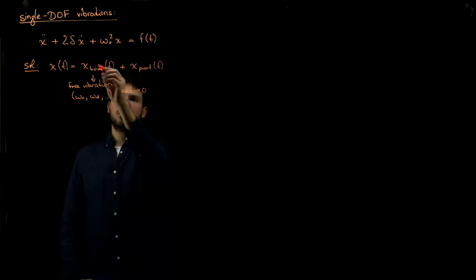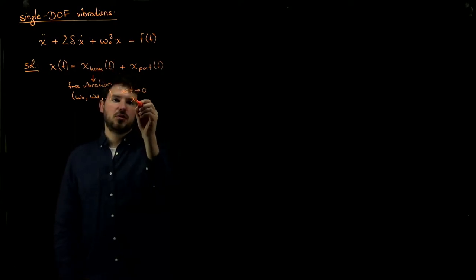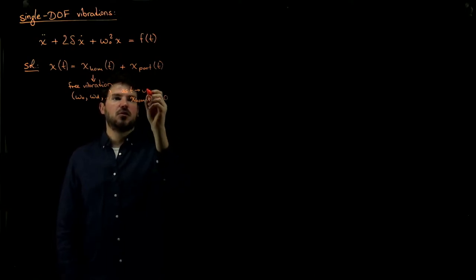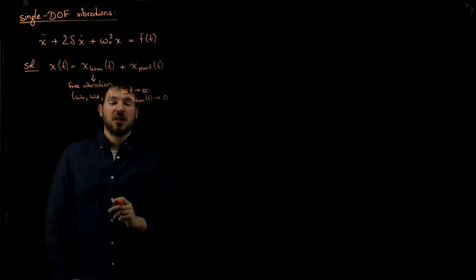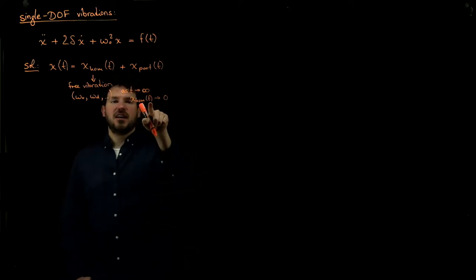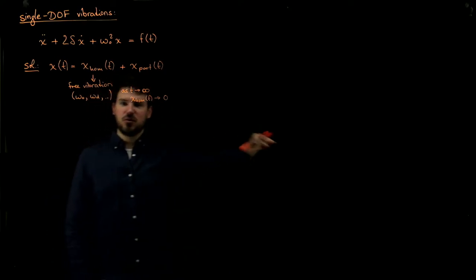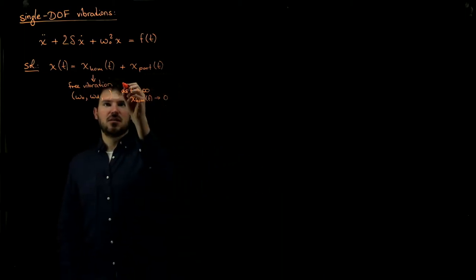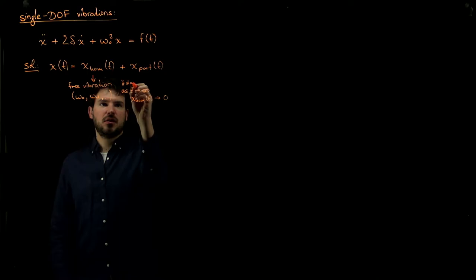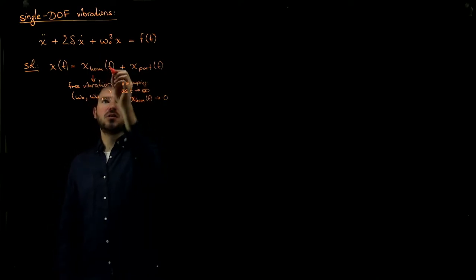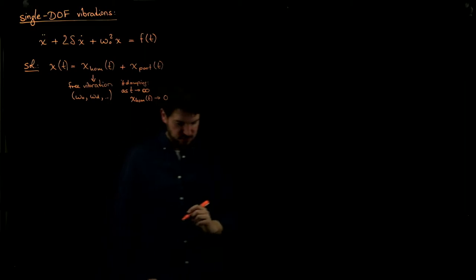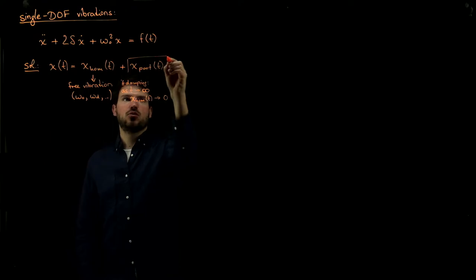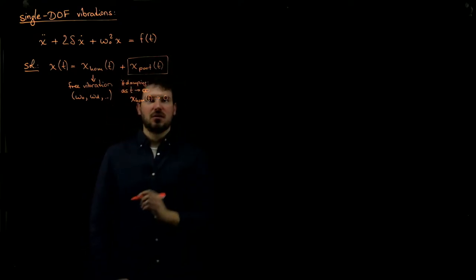As time goes to infinity, the homogeneous solution x_h of t should go to zero, because the vibrations will disappear over time if there is just a tad bit of damping in the system. So if there is damping, this solution will go to zero, which means only the particular solution survives — and this is why we call it the steady-state solution.